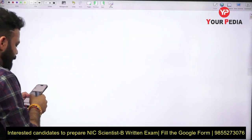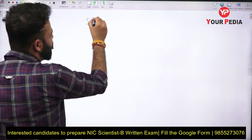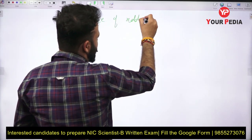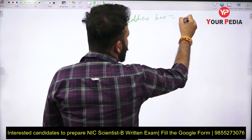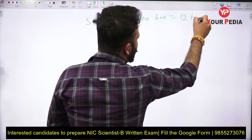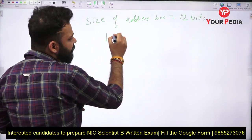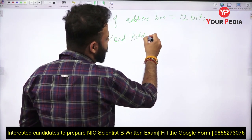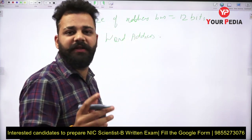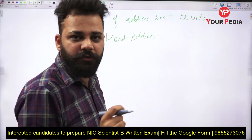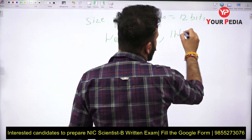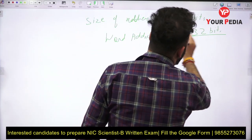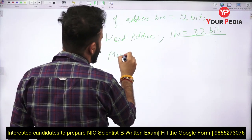Another variation: let's say the size of the address bus is 12 bits and memory is word addressable. If memory is word addressable they will also give you the word size. Let's say one word size is equal to 32 bits. They are asking: what will be the memory size in bytes?